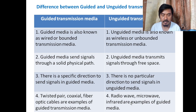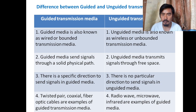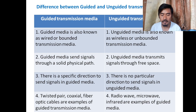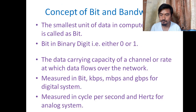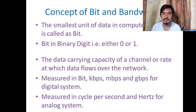Examples of unguided media are radio waves, microwave, and infrared. So when you use FM radio, satellite, Wi-Fi, or a remote control, you are using wireless transmission media.